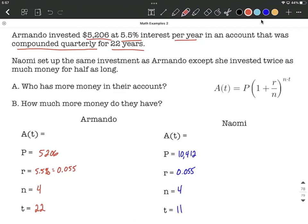All this information is going to get filled into our compound interest formula for both of them. In Armando's case, A(22) is going to be $5,206 times (1 + 0.055/4) raised to the 4 times 22. I get this to work out to be $17,314.919, which I'm going to round up to $17,314.92.